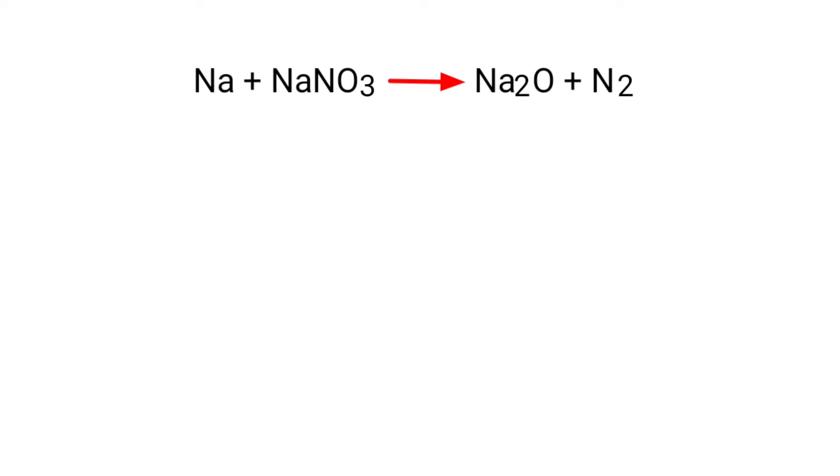First thing we do is give each compound a letter coefficient. A Na plus B NaNO3 gives us C Na2O plus D N2.